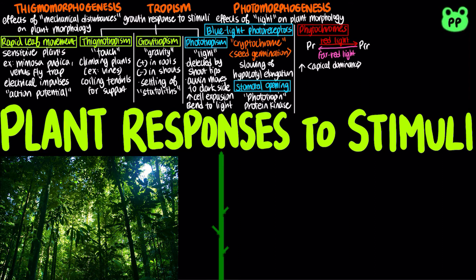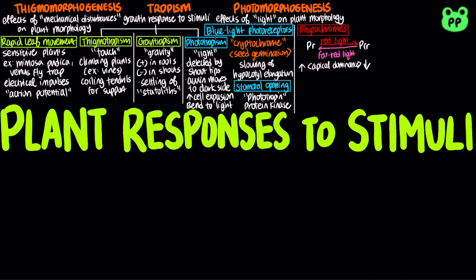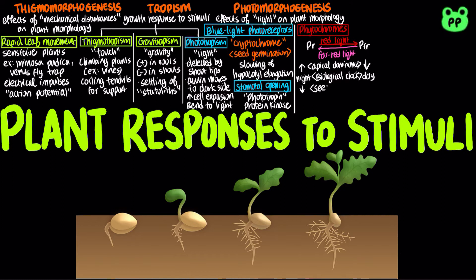In contrast, direct sunlight increases the proportion of the FR-form, which stimulates branching and inhibits apical dominance. The phytochrome system also plays an important role in establishing a plant's biological clock, as the R-form of phytochrome predominates at night, whereas the FR-form of phytochrome predominates during the day. Phytochromes also influence seed germination: red light stimulates germination, whereas far-red light inhibits germination.